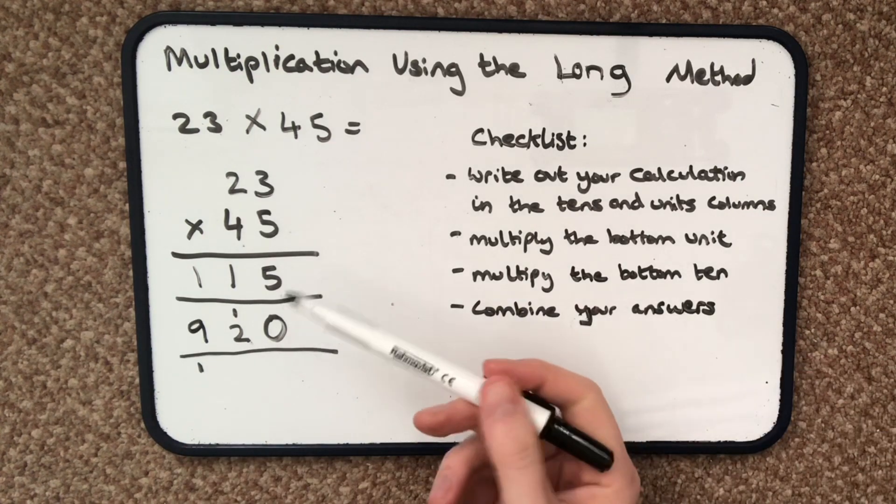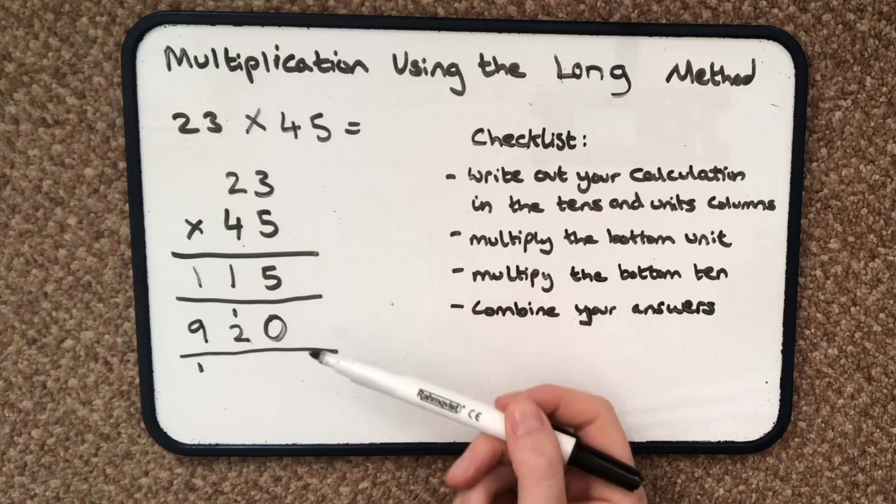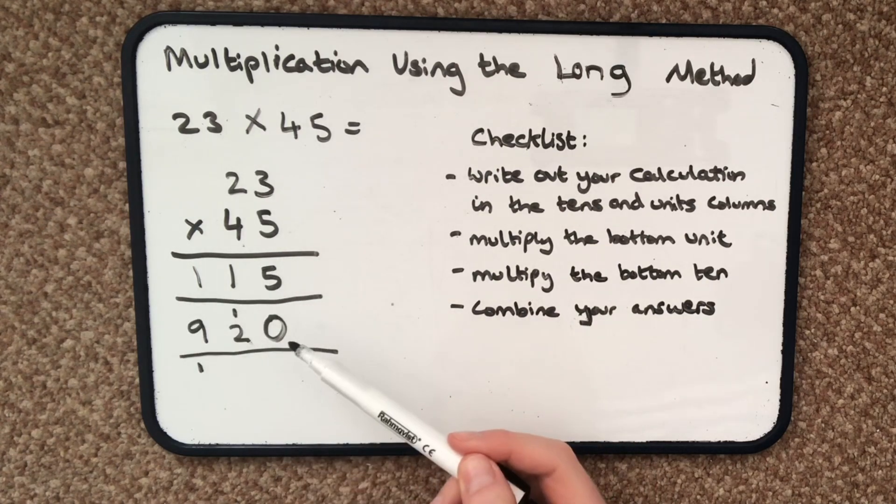I'm almost finished. This row here is 5 times 23 and this row here is 40 times 23, and I now need to combine my answers.